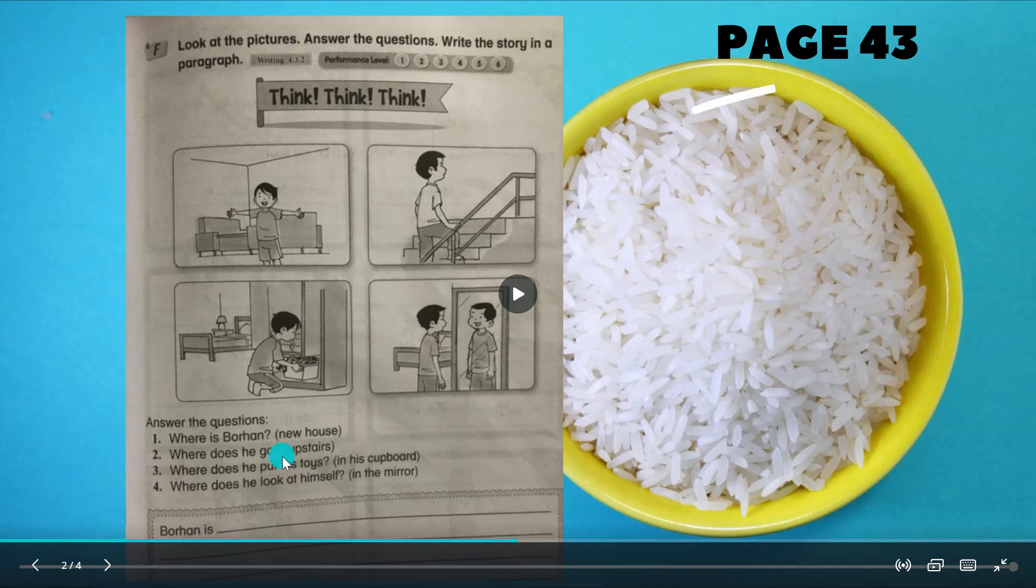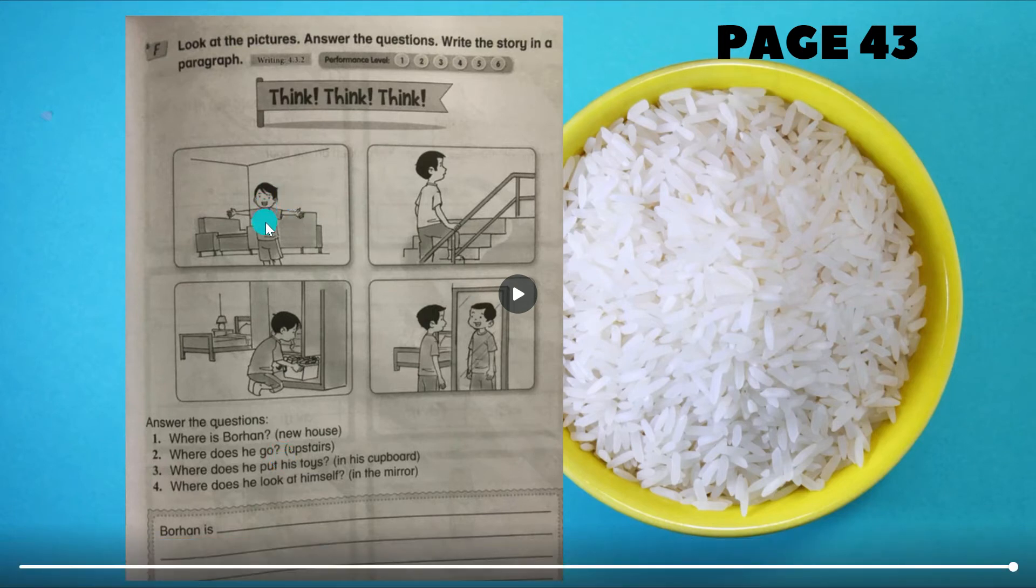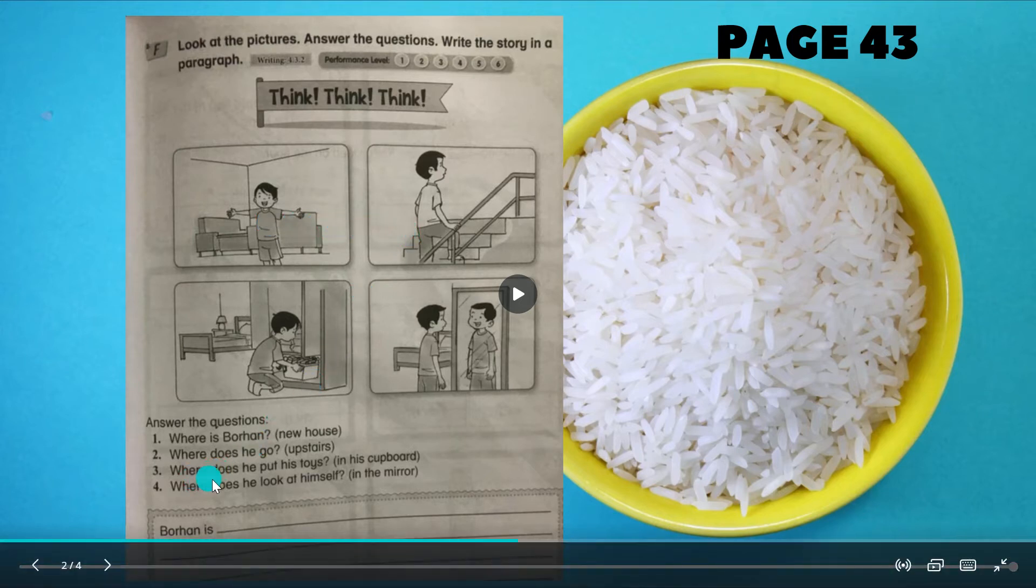Number two - where does he go? Clue dia upstairs, maksudnya tingkat atas. So ayat awak - he goes. Daripada go tukar kepada goes, ada es belakang dia sebab he. He goes upstairs. Yang pandai tu boleh sambung to his bedroom. Dia naik tingkat atas pergi ke bilik tidur dia.